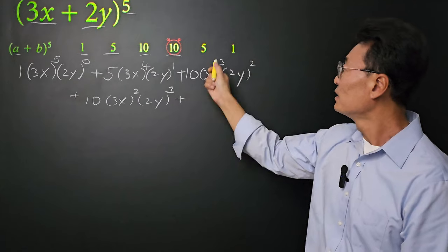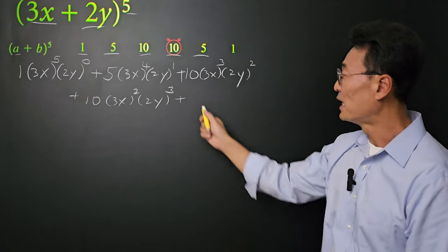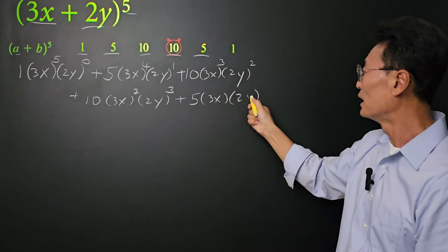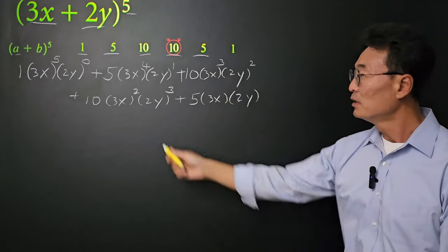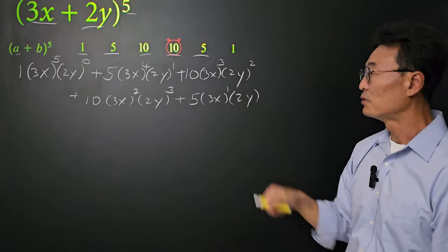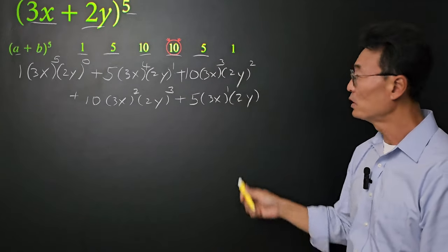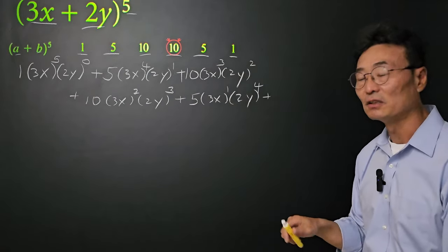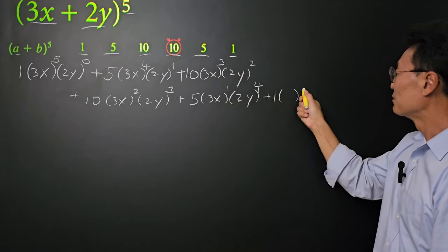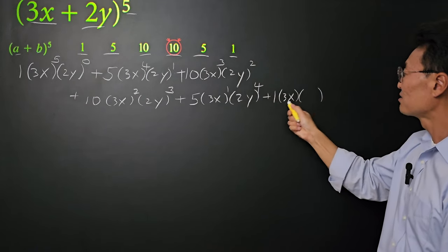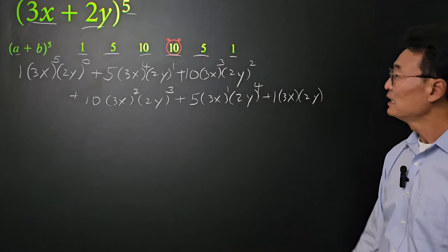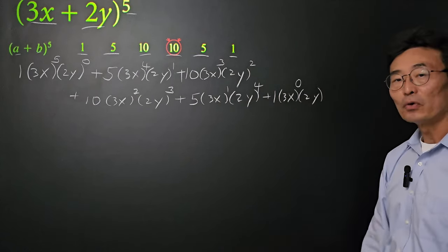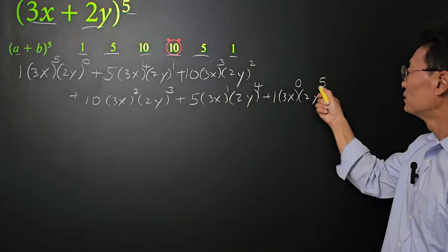Plus, we're almost done. The next coefficient is 5. I put 3x and 2y in the parentheses: the 2 goes down by 1, giving us 1, and the 3 goes up by 1, giving us 4. Plus, the last one has a coefficient of 1. We put 3x and 2y in the two sets of parentheses. The 1 goes down by 1, making it 0, and the 4 goes up by 1, making it 5.